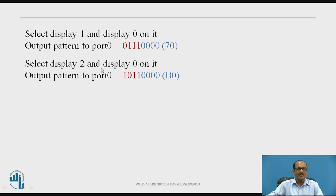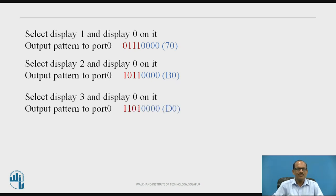Similarly, to select display 2 and output 0 to that display, we have to output the pattern 1011 0000, that is B0H. Similarly, for selecting display 3 and displaying 0 on display 3, we have to output 1101 0000, that is D0H to port 0. This technique is used to output the required BCD digit on the required display, from display 0 to display 3.